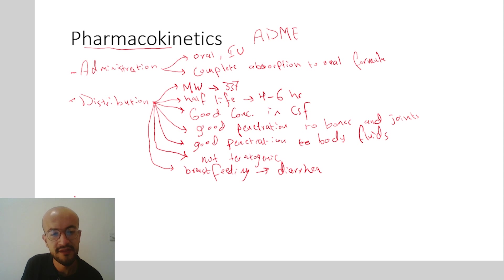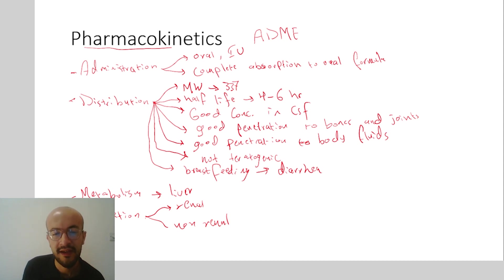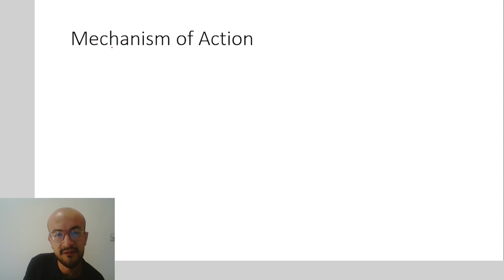The metabolism of linezolid occurs in the liver. Excretion is by both renal and non-renal routes, which is very important because patients with renal failure require no dose adjustment. Similarly, patients with hepatic failure also do not require dose adjustment.